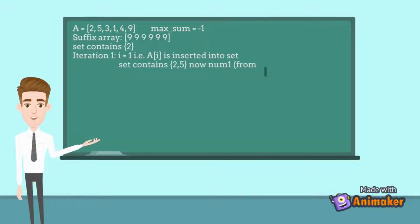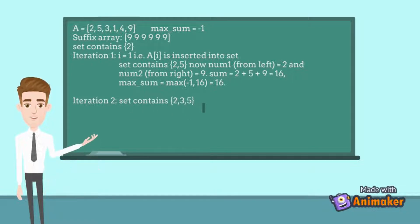In iteration 1, we insert the current element, then we search the current element in set. The number just before the current element will be our largest smaller number from left, that is 2, and suffix of i+1 will be the maximum number from right, that is 9. So the sum becomes 2 + 5 + 9 which equals 16. The max sum variable will contain the maximum value of sum, that is equal to 16.